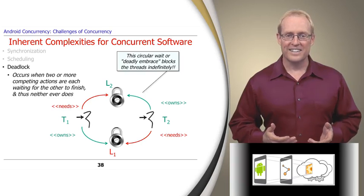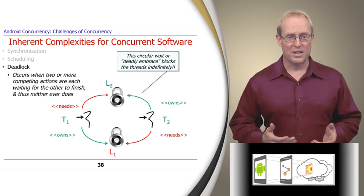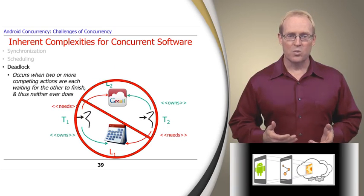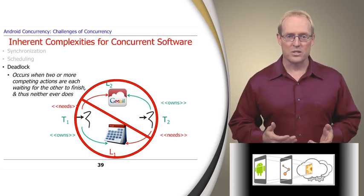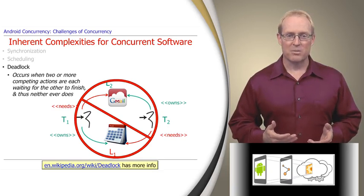Identifying, detecting, and removing deadlocks is an inherent complexity of developing concurrent software. For example, you wouldn't want the Android Gmail application to deadlock on resources held by the calendar application and vice versa. This link provides more information on deadlock.